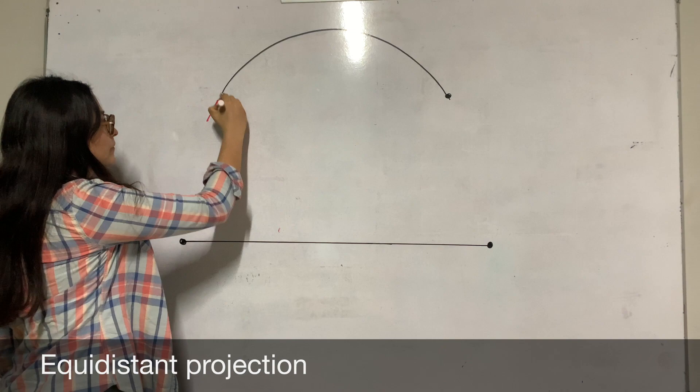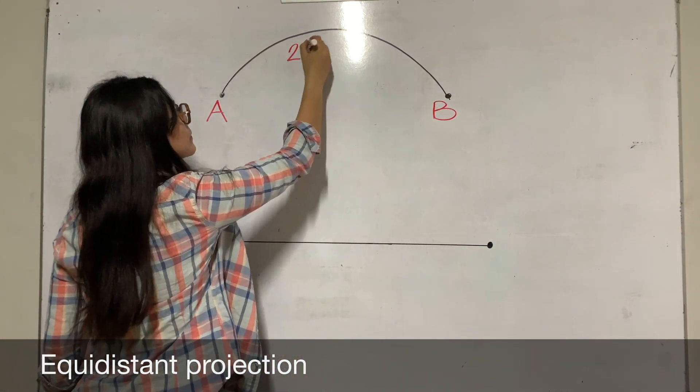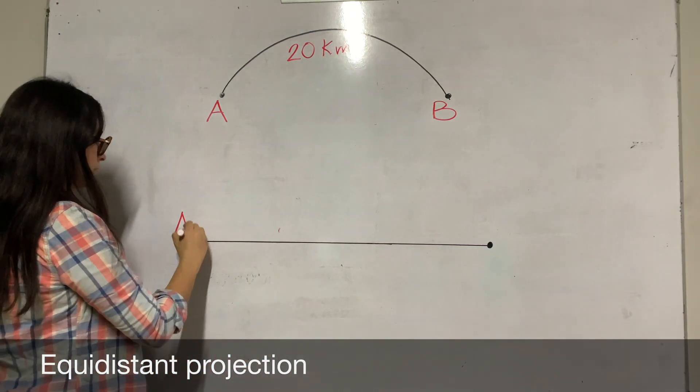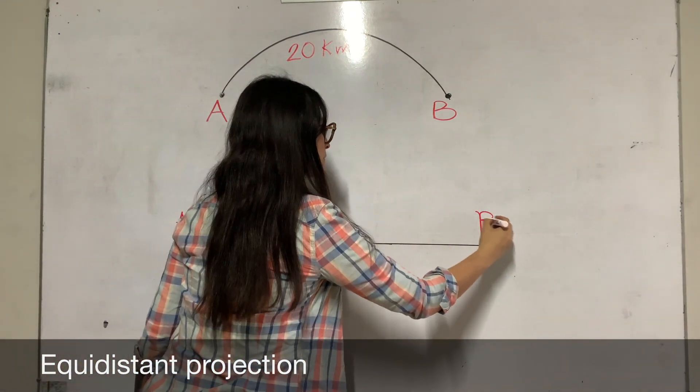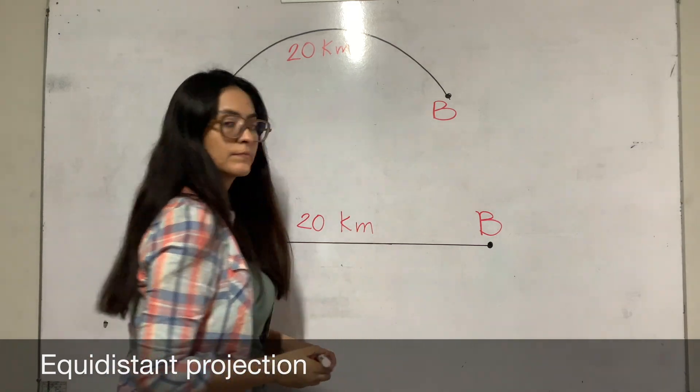Equidistance maps preserve the distances between certain points. Most equidistance projections have one or more lines in which the length of the line on a map is the same length at map scale as the same line on the globe.